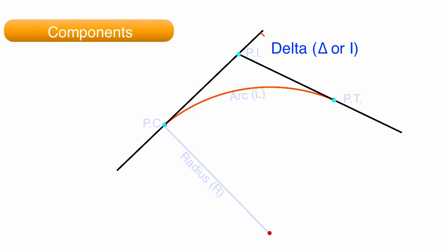The delta angle is the deflection angle at the PI. This angle is often abbreviated as I, or delta. The delta angle is also the angle subtended between the PC and the PT.